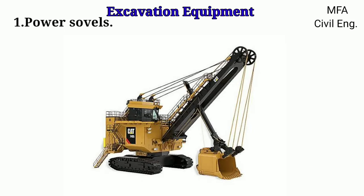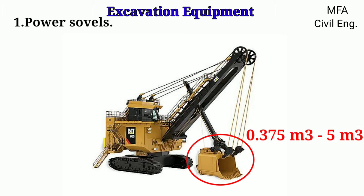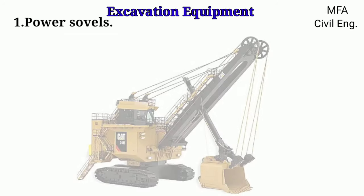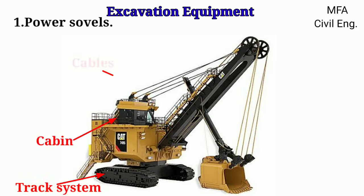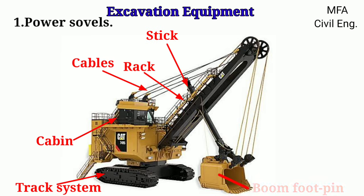The size of the power shovel depends on the type of work. The size of the bucket or dipper denotes the size of the power shovel. The size of the power shovels varies from 0.375 cubic meters to 5 cubic meters. The basic parts of the power shovel include the track system, cabin, cables, rack, stick, boom, foot pin, saddle block, boom point sleeves, and the bucket.